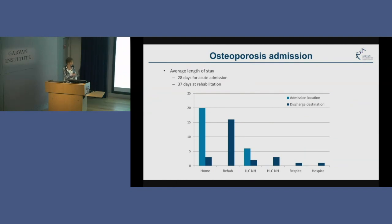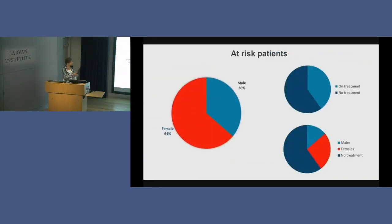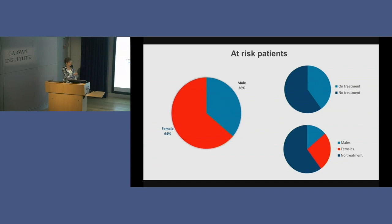Of all the at-risk patients — and this represents what happens in the community — about two-thirds were women and a third men. About two-thirds of people were not on treatment; a third were on treatment. Of those who are on treatment, two-thirds are women and a third men. So men have fewer fractures, but they also get recognised less and are treated even worse than women, because osteoporosis in men is not recognised.